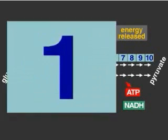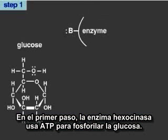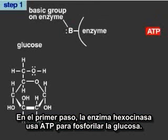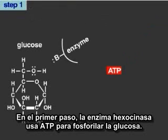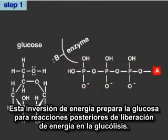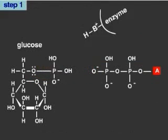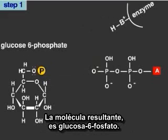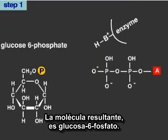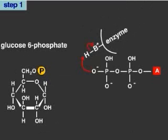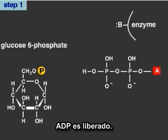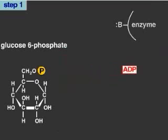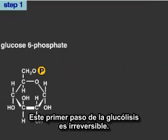In the first step, the enzyme hexokinase uses ATP to phosphorylate glucose. This investment of energy primes glucose for energy-releasing reactions later in glycolysis. The resulting molecule is glucose 6-phosphate. ADP is released. This first step of glycolysis is irreversible.